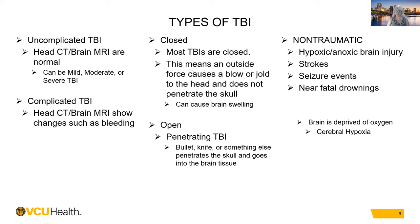Open TBI is mostly associated with a penetrating traumatic brain injury, but you could have major car accidents with open skull fractures going into the brain. Penetrating injuries include bullets, knives, or something else that penetrates the skull and goes into brain tissue. Non-traumatic types of TBI include hypoxic or anoxic brain injury, strokes, seizure events, near-fatal drownings where the brain is deprived of oxygen and you have cerebral hypoxia. Make sure that your TBI is traumatic in order to code it for your trauma patient.